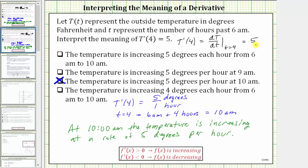Looking at the fourth sentence, it says the temperature is increasing four degrees each hour from 6 a.m. to 10 a.m. This is incorrect for two reasons. The rate of change is five degrees per hour, and this is only true at 10 a.m., not from 6 a.m. to 10 a.m.